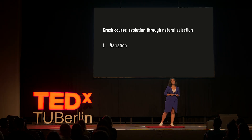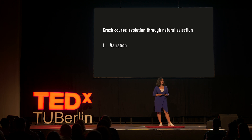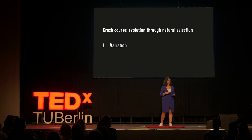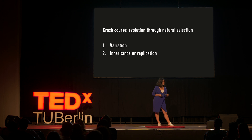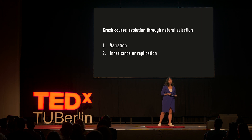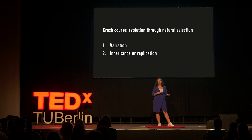So, how do languages and species evolve similarly? Here's a quick recap of evolution through natural selection. First, we have variation — organisms within populations show individual variation: differences in appearance and behavior, or different DNA, different genes. Second, inheritance or replication — some traits are consistently passed from parent to offspring. And third, differential fitness — organisms have different rates of reproduction or mortality, and organisms with the best suited genes for their environment tend to survive and pass their genes to their offspring.